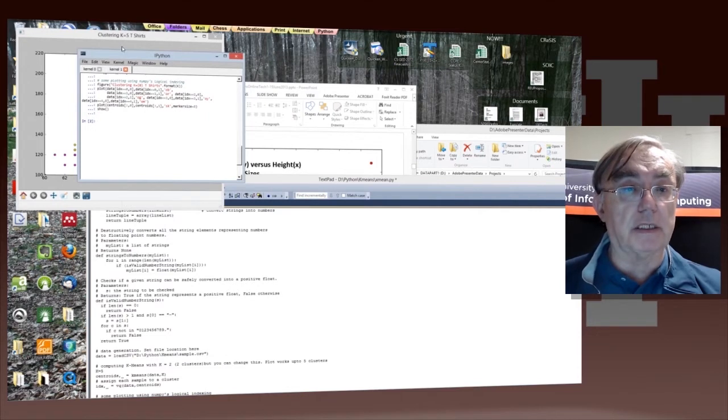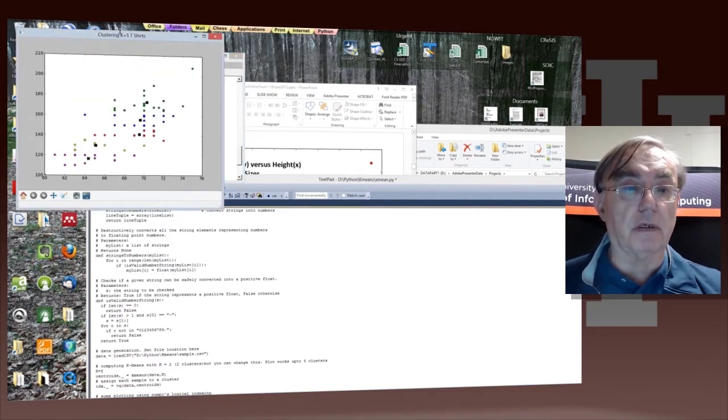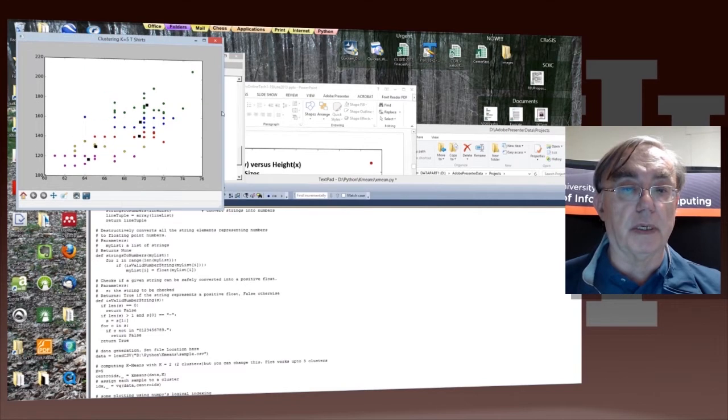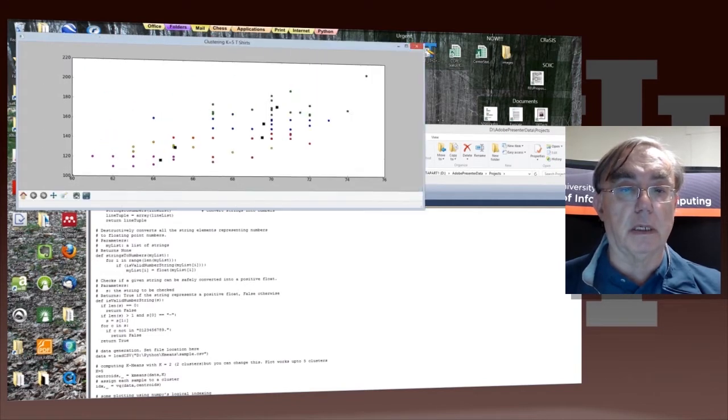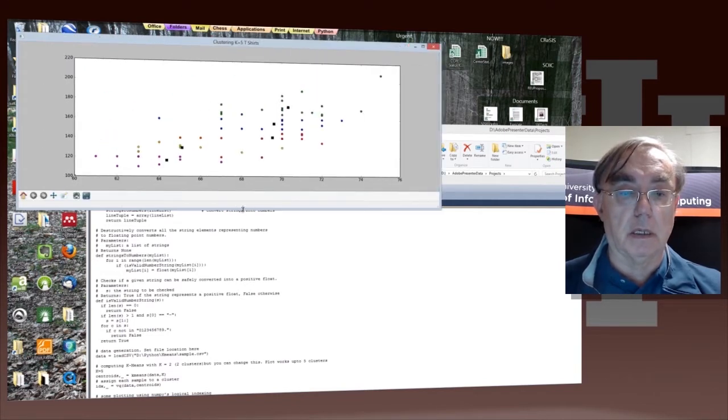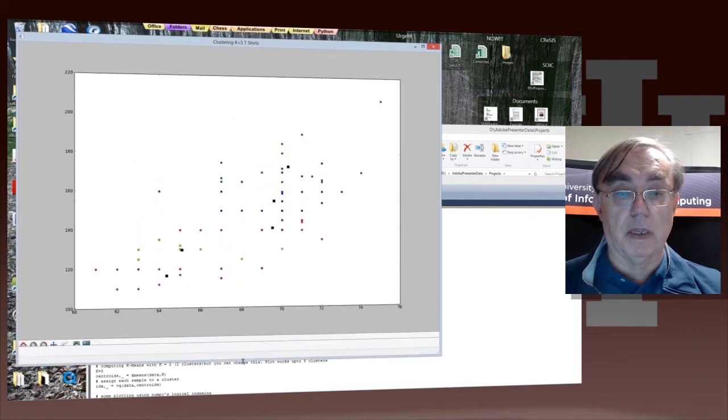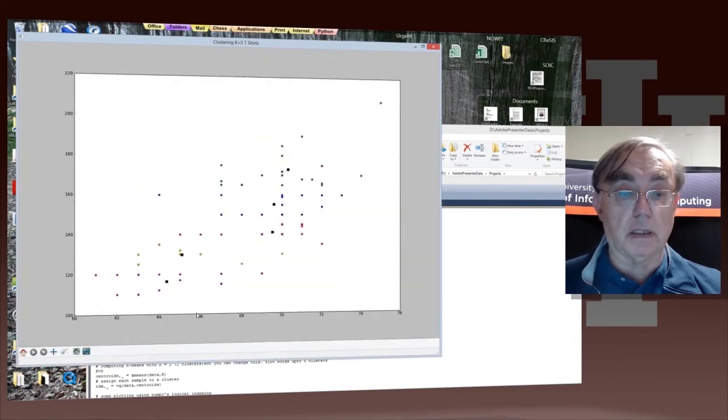Here it goes. We get the answer. This is very quick, it's only 85 records, and it's not actually very big. Let's see if we can make it bigger. Here we are. The black squares are the centers: one, two, three, four, five.